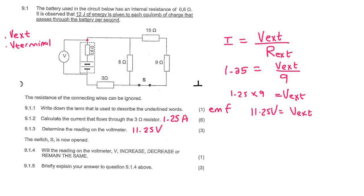We are now told that the switch is opened. So the switch is opened. So what that does is it completely gets rid of this entire part of the circuit. The question says, will the reading on the voltmeter increase, decrease, or remain the same?